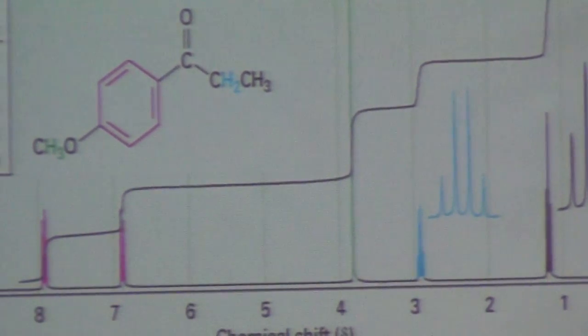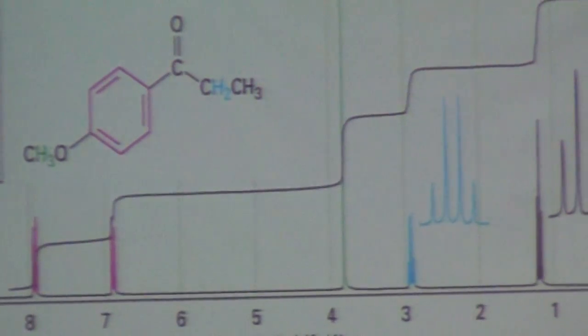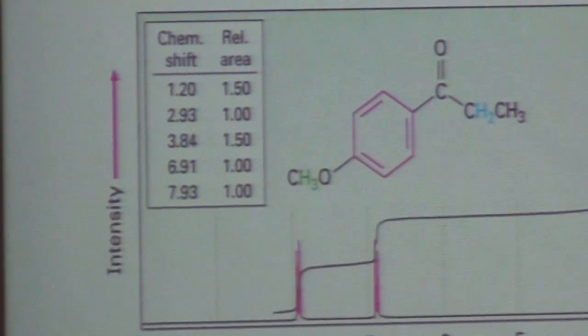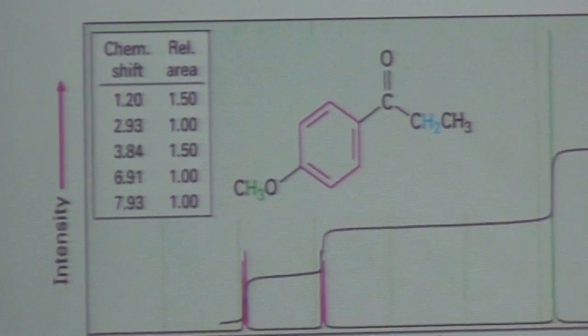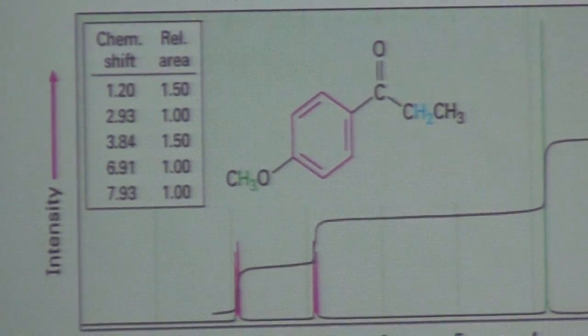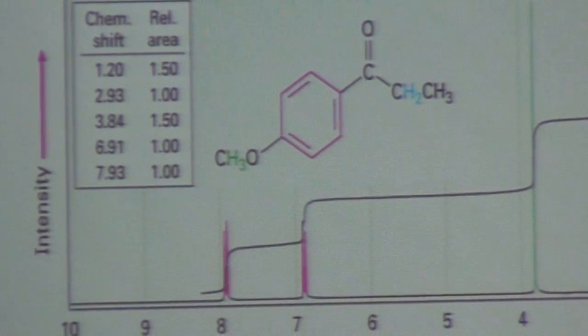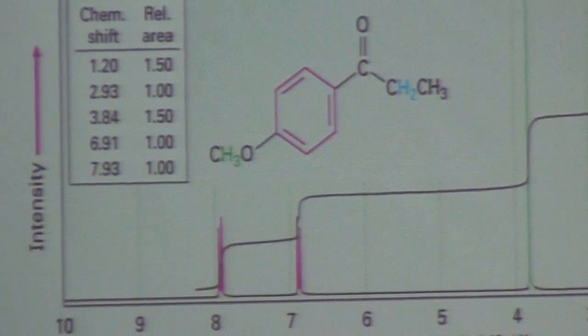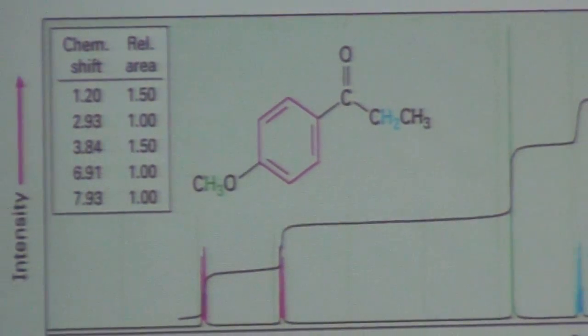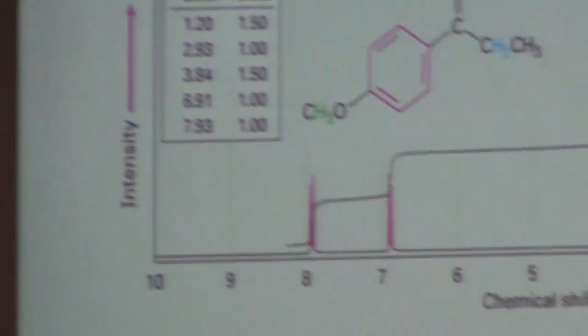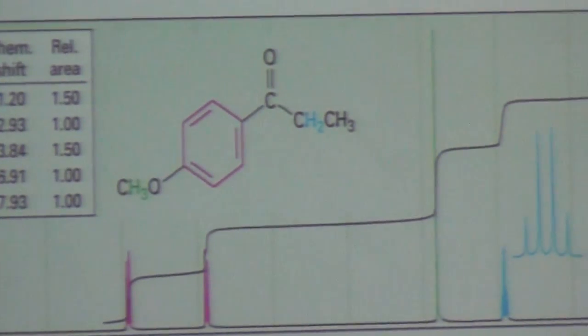Again, of course you have the chemical shifts given to you and you also have the relative proton ratios given to you. You can use this information to actually analyze what your molecule is. So 3.8 unsplit. If it is unsplit it must be the methoxy part of the molecule because the methoxy has no flanking carbon atom with a hydrogen attached to it. No neighbors. Therefore it must be unsplit.